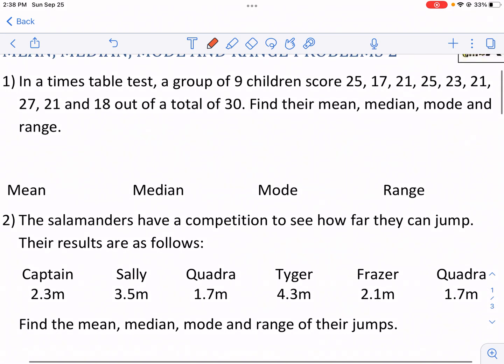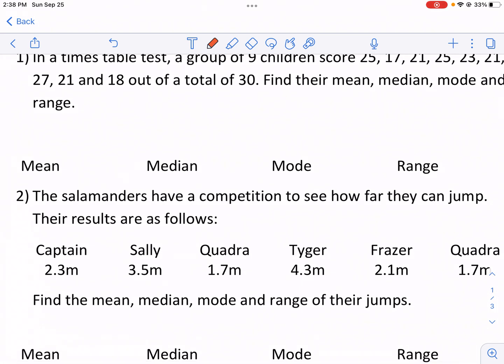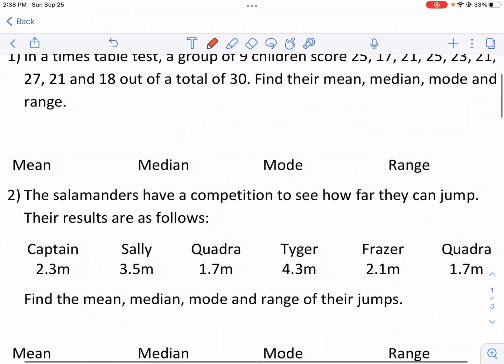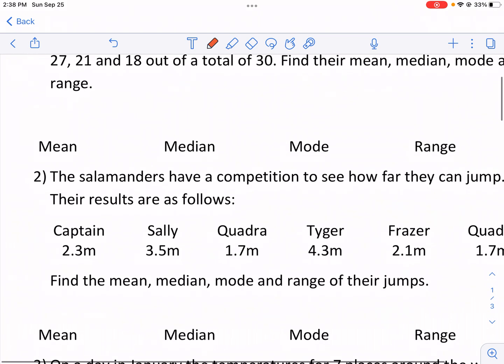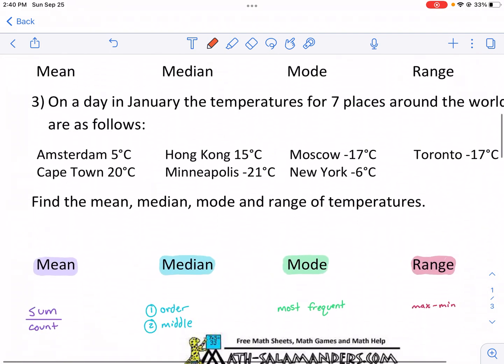Let's go ahead and get into our first problem. In a times table test, a group of nine children score 25, 17, 21, 25, 23, 21, 27, 21, and 18 out of a total of 30. Find their Mean, Median, Mode, and Range.